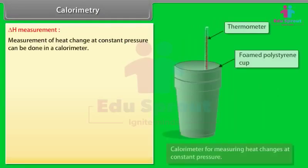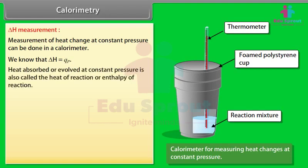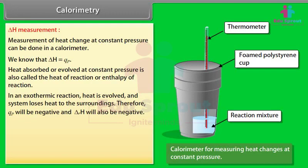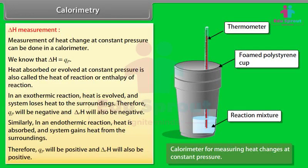ΔH measurement. Measurement of heat change at constant pressure can be done in a calorimeter. We know that ΔH = QP. Heat absorbed or evolved at constant pressure is also called the heat of reaction or enthalpy of reaction. In an exothermic reaction, heat is evolved and the system loses heat to the surroundings; therefore QP will be negative and ΔRH will also be negative. In an endothermic reaction, heat is absorbed and the system gains heat from the surroundings; therefore QP will be positive and ΔRH will also be positive.